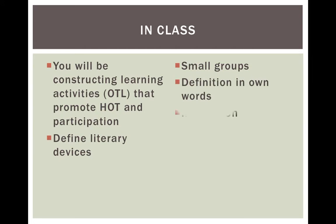You can have them engage in small group work to define the literary devices in their own words. There are four parts to it: one is to define in their own words; the second is to illustrate what the literary device is; the third is to analyze or create an analogy of that literary device — mood is like this, tone is like that; and the last is to work together as a group to come up with an example of that literary device from a text. They're working together and must understand what the literary device is in order to complete all four tasks.